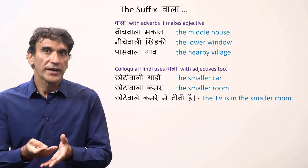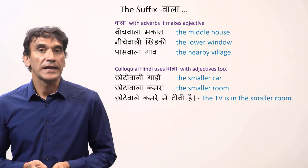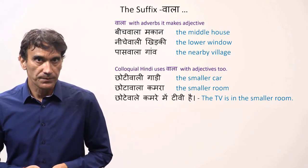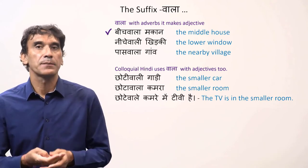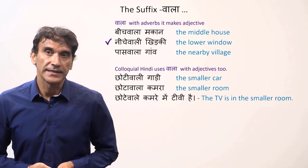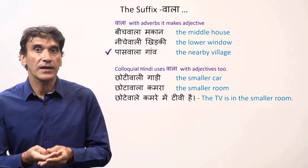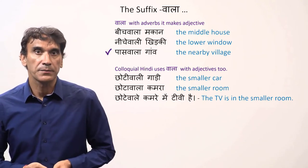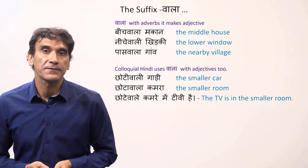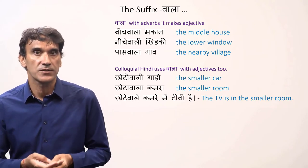You can add wala to adverbs to make adjectives. These adjectives should agree with the noun. For example: beech wala makaan — the middle house; niche wali khidki — the lower window; paas wala gaon — the nearby village. Sometimes in colloquial Hindi, the suffix wala is added to adjectives too.